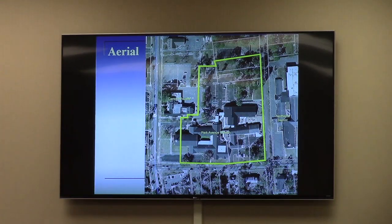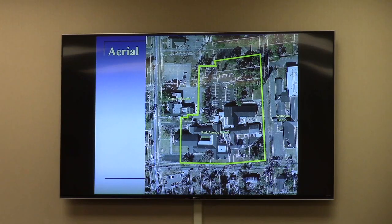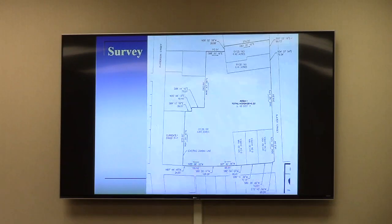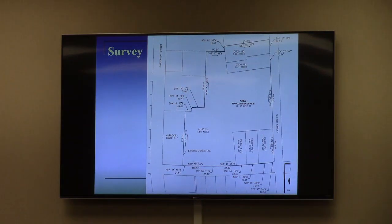On the aerial map, the entire area within the boundary is what is to be rezoned. This is the bulk of the church campus. The survey is available in your packets.